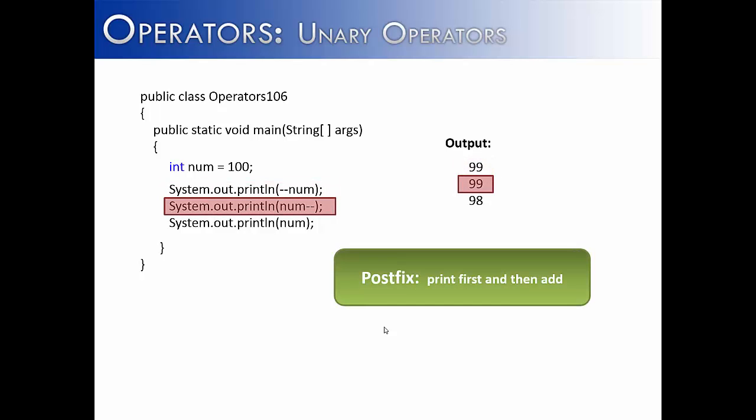And then on the next line, we're using postfix. You see num--. So it's going to print 99 again, even though it's just about to subtract 1 from it. So if we print num on the next line, it has taken away 1 in the last line. It just printed out the value first.